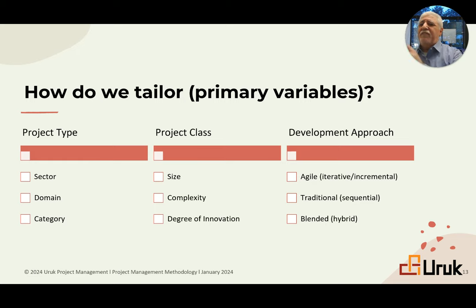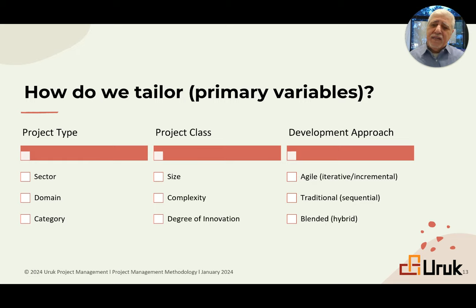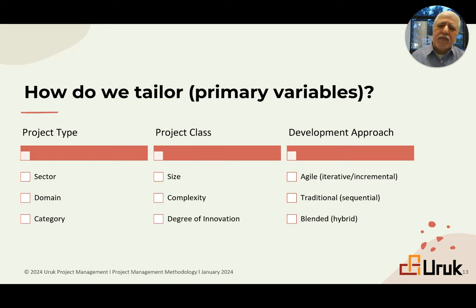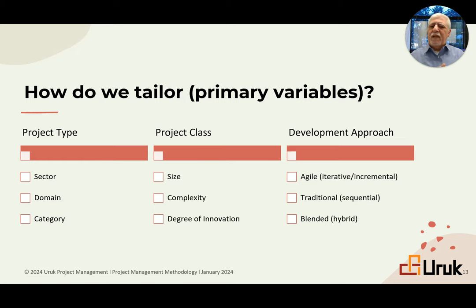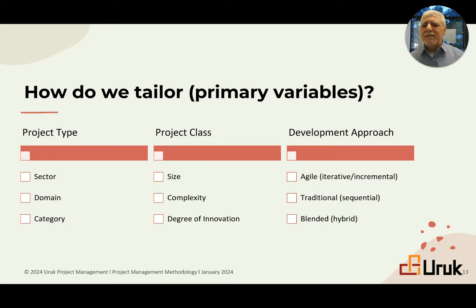In closing: we often debate what is or is not a project management method or methodology. In this video, we share the six components of a project management method. A PM method is a process covering the entire project — not a method limited in scope, such as earned value management or the critical path method. My colleague Trevor Nelson raised a great question on January 19th on LinkedIn: we always say what is not a method — but what is a method? That's what we tried to answer here.